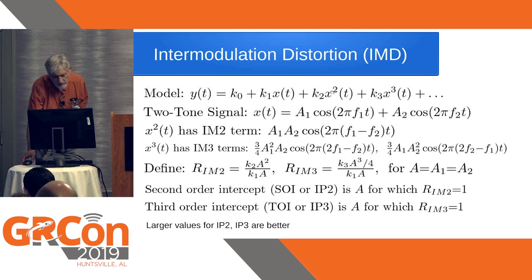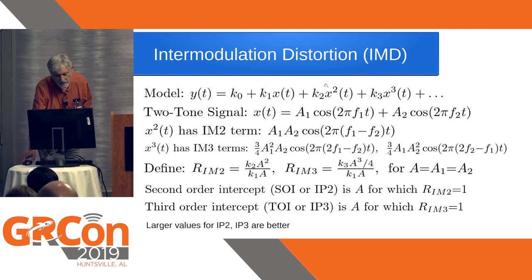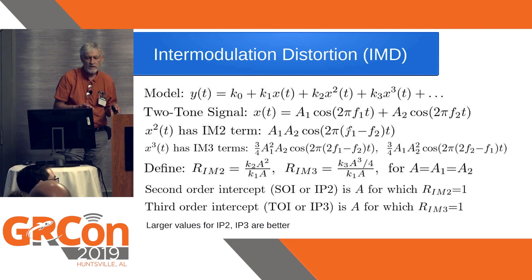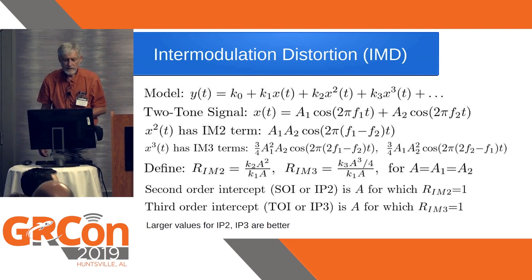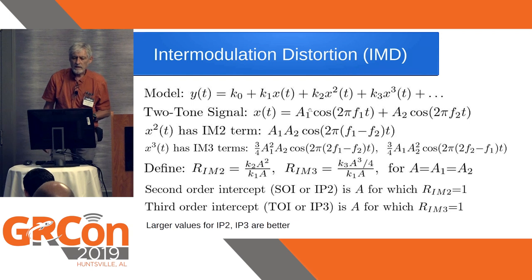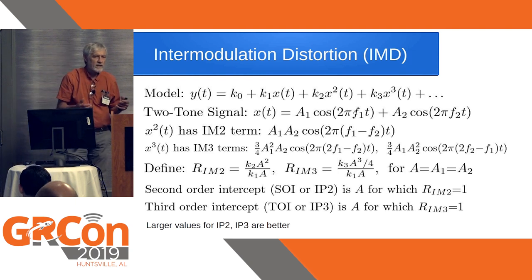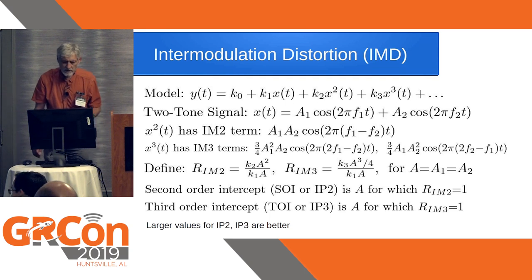The product of the two tones gives a term at cos(2π(f1 − f2)t). Because f1 and f2 are close to each other, you get a component at a very low frequency — that's why it affects the direct conversion receiver. Then when you take x³(t) — raising the sum of two cosines to the third power — you get a term containing 2f1 − f2 or 2f2 − f1. Because f1 and f2 are similar, that results in a frequency similar to either f1 or f2.